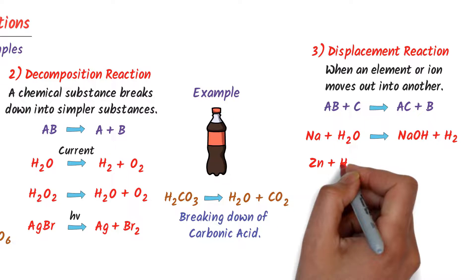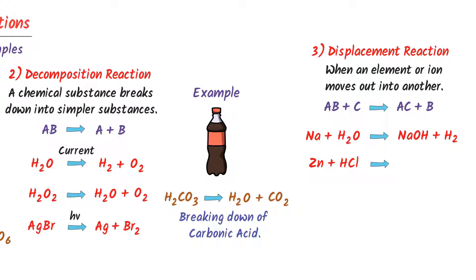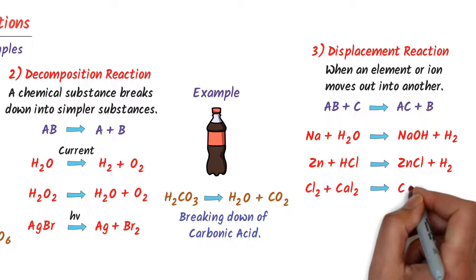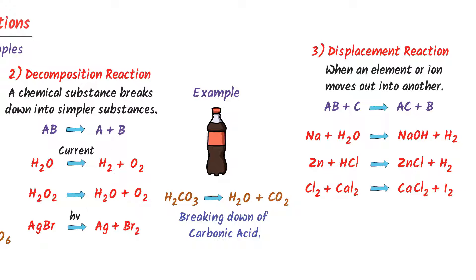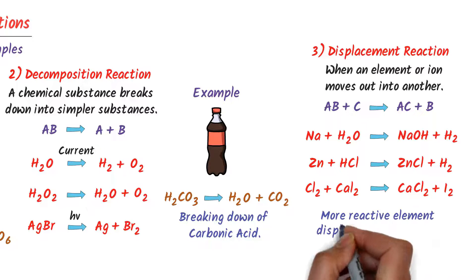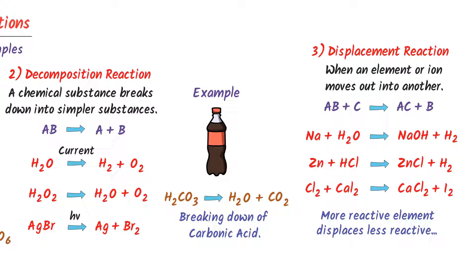Secondly, zinc plus HCl would react together to form zinc chloride plus hydrogen gas. Thirdly, chlorine gas plus calcium iodide would react together to form calcium chloride plus iodine. Remember that these reactions only occur when the element moving into the compound is more reactive. For example, zinc is more reactive than hydrogen, so zinc is replacing hydrogen. That's why we call it a displacement reaction.